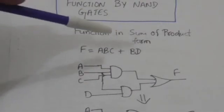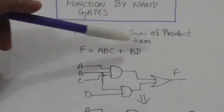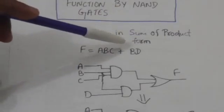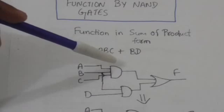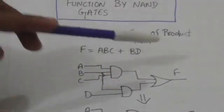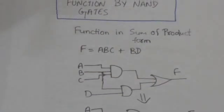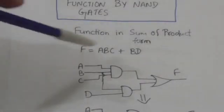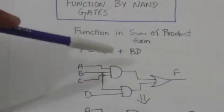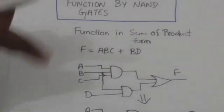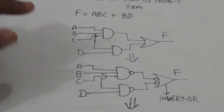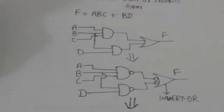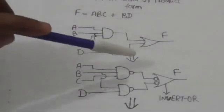We need a NAND gate for each AND term, and the outputs of the NAND gates would be connected to the input of a single OR gate. Here is the implementation of this function F by NAND and OR gates. Now we know that the complement of complement restores the original value.